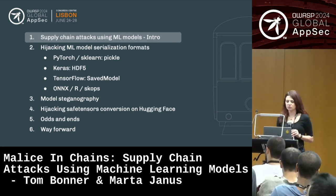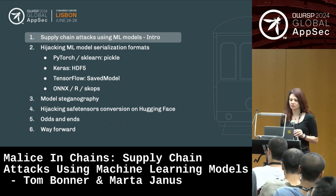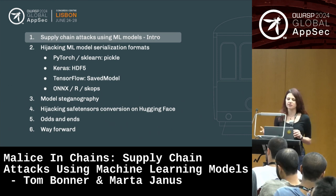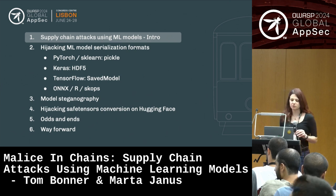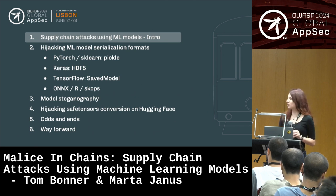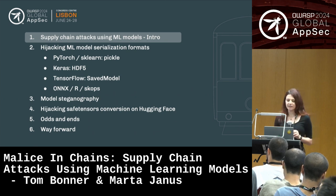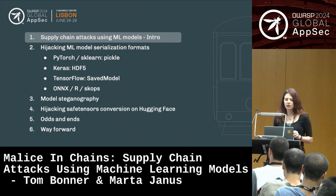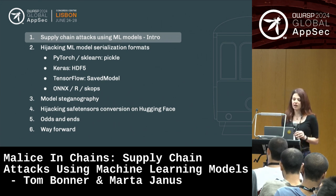We will walk through some scenarios in which we will hijack models — PyTorch model, Keras, TensorFlow — and then we will also mention some flaws in ONNX, R, and SKOPS. We will also look at a technique called model steganography, which can be used to hide malicious payloads inside machine learning models.